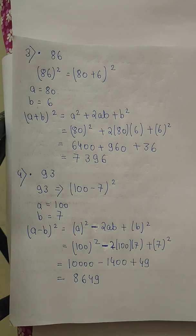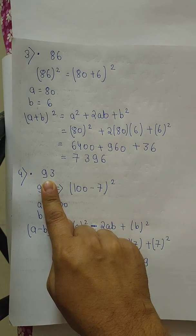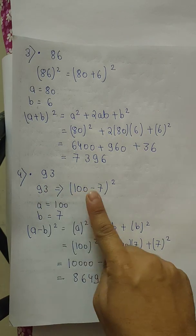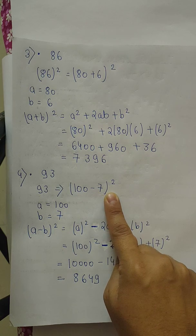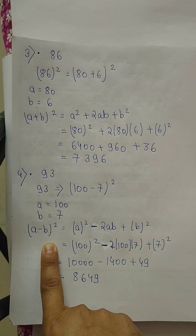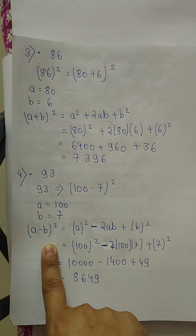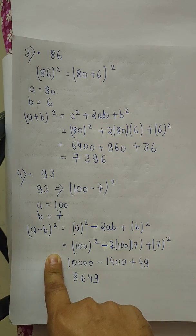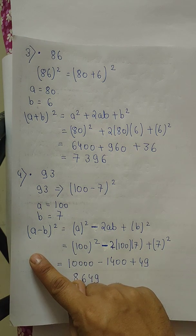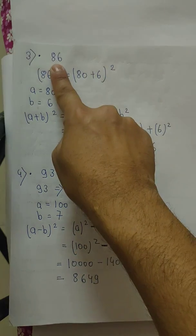93. We can also write this as 90 plus 3, but let's introduce a different difficulty level. 93 can be written as 100 minus 7 so that we can use a different formula, that is (a-b)². You can use either (a+b)² or (a-b)², using different properties the same answer will come. If we use (a+b)², we'll write it as 90 plus 3, and if we want to use (a-b)², we'll write it as 100 minus 7. Same as 86 can be written as 80 plus 6 for using (a+b)², and if you want to use (a-b)², it can be written as 100 minus 14 or 90 minus 4, according to you.